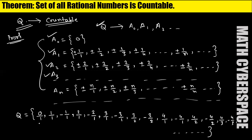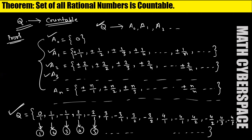Here 0 is our first element, 1 is our second element, −1 is our third element, 2 is our fourth element, −2 is our fifth element, and so on. In this way, every rational number gets a one-to-one correspondence with a natural number. So there exists a one-to-one correspondence between the elements of Q and the natural numbers, and therefore this set Q is countable.